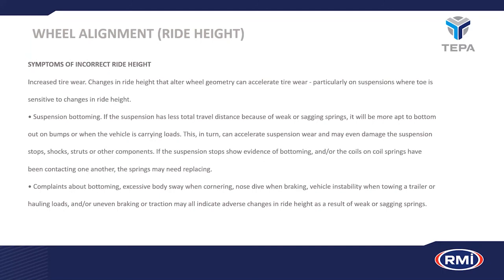Further symptoms of incorrect ride height include increased tire wear, suspension bottoming out because the springs have weakened through use — springs effectively are a service item with a finite lifespan, as they are continuously cycling through metal fatigue, especially when the vehicle is driven hard or carries heavy loads — and of course body sway and nose-diving when braking. Any untoward vehicle instability is a factor when it comes to ride height.